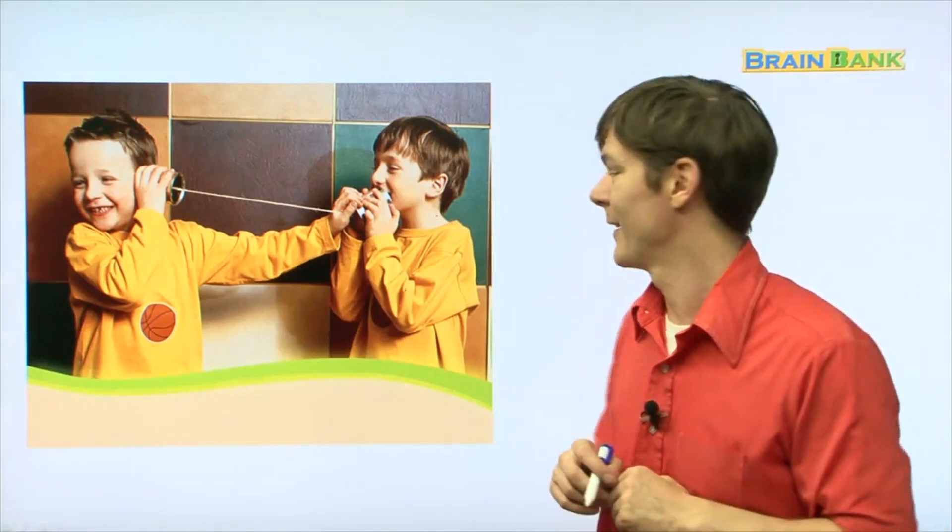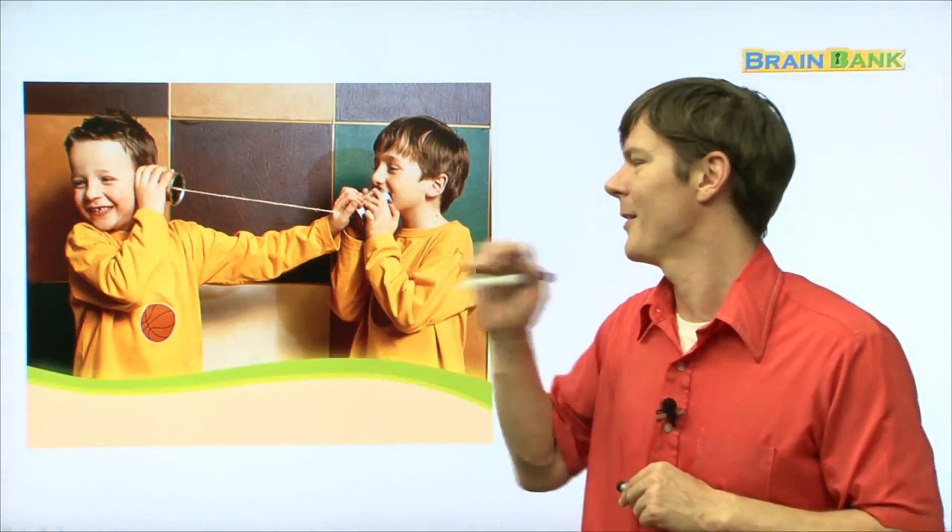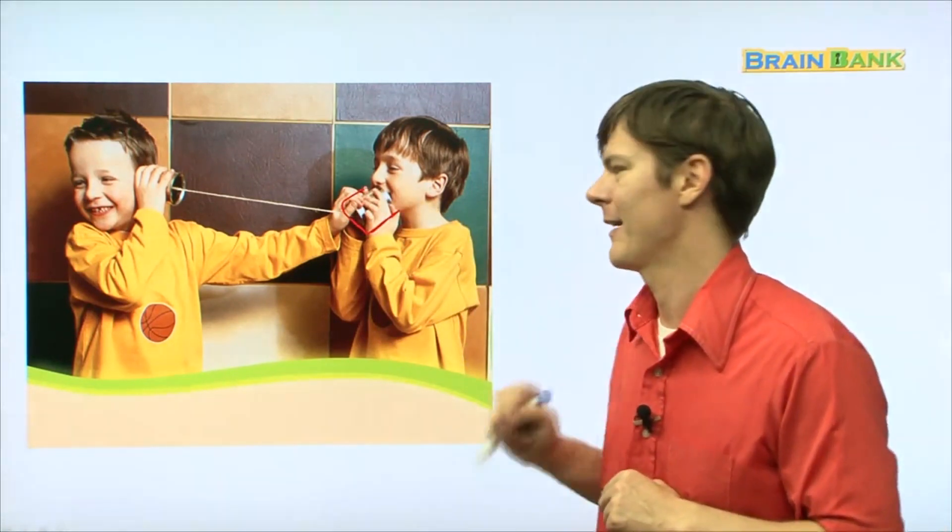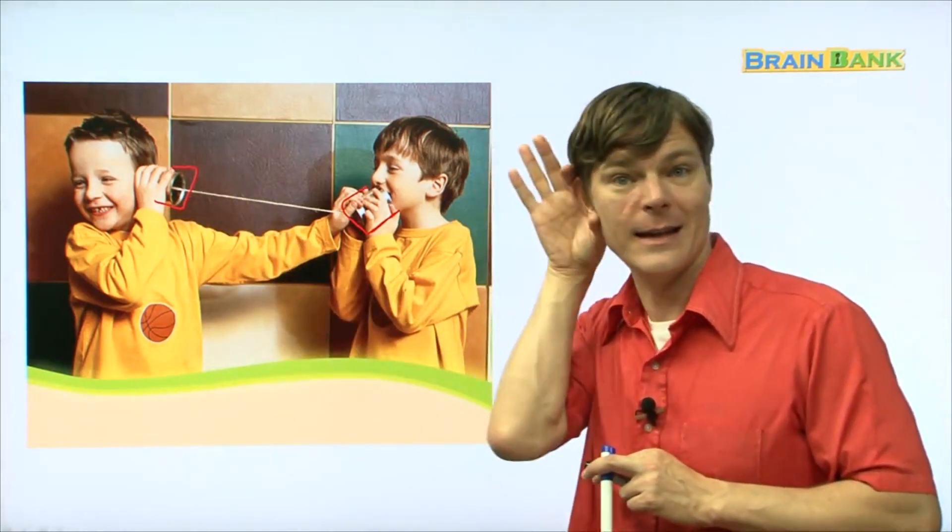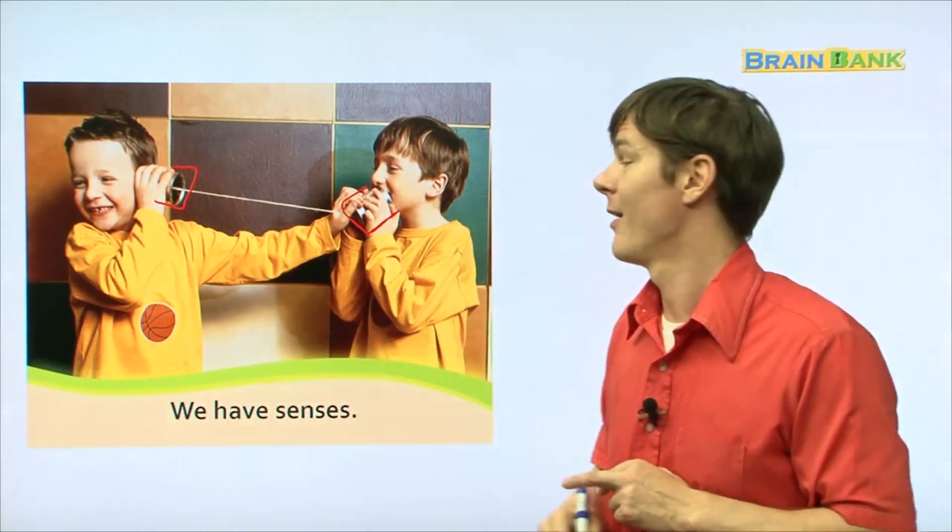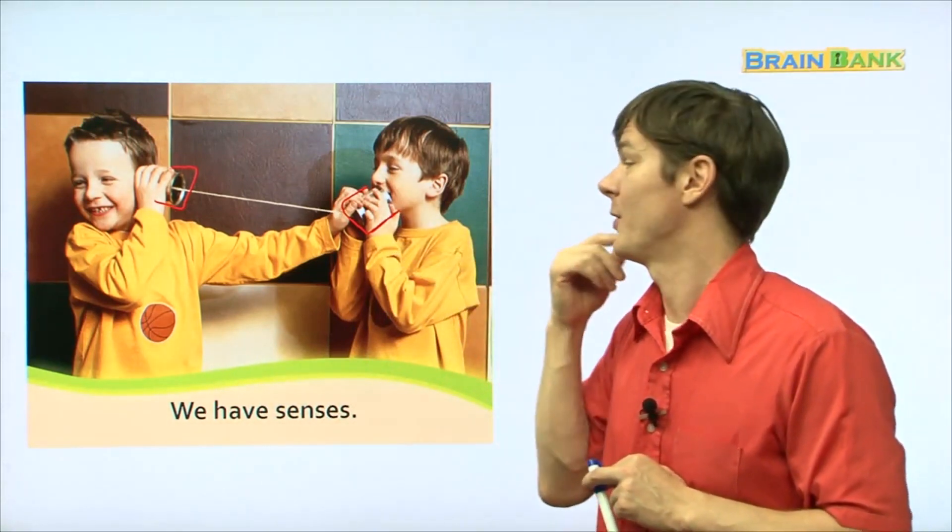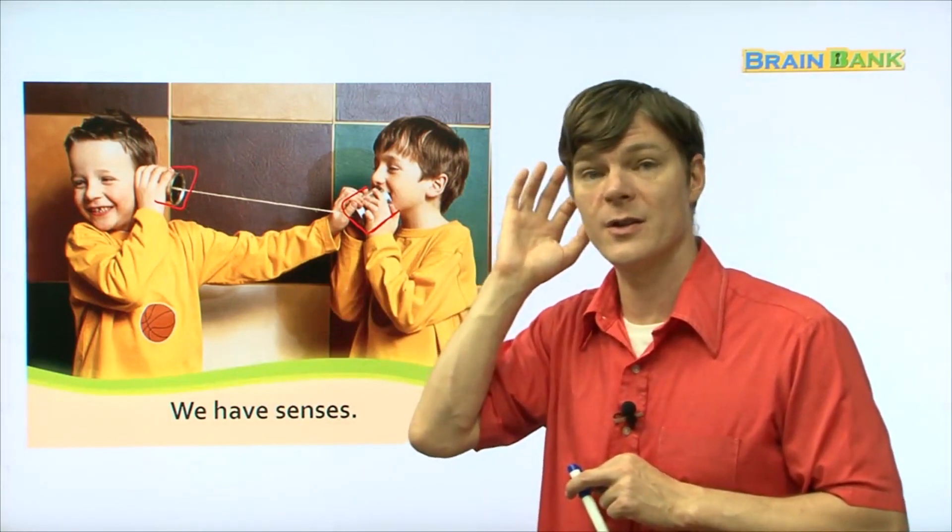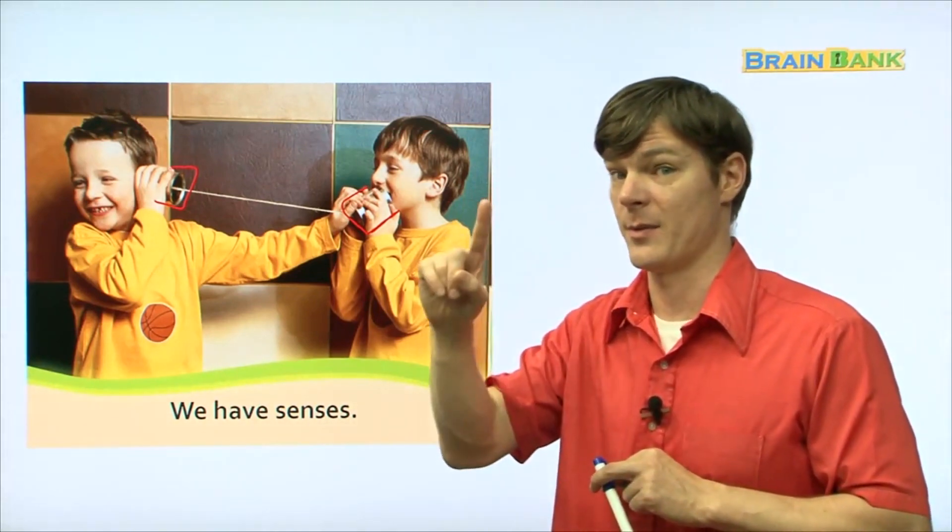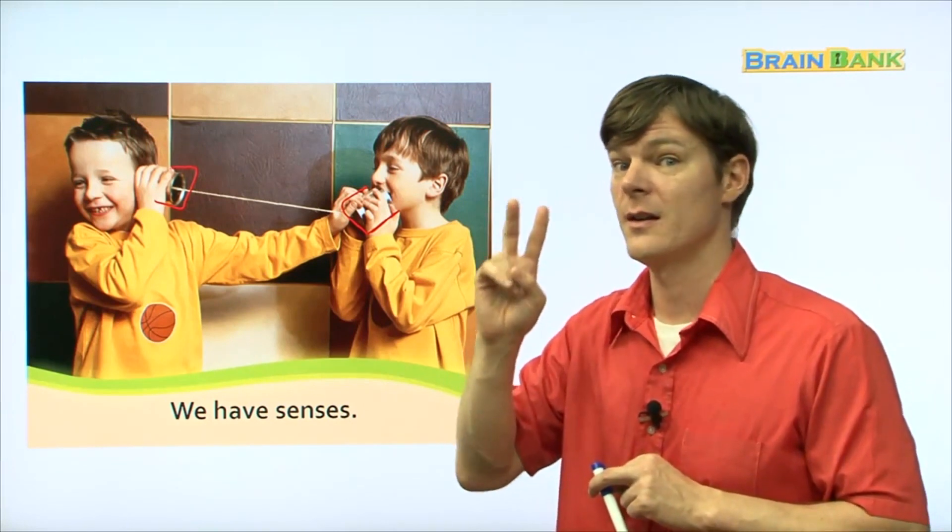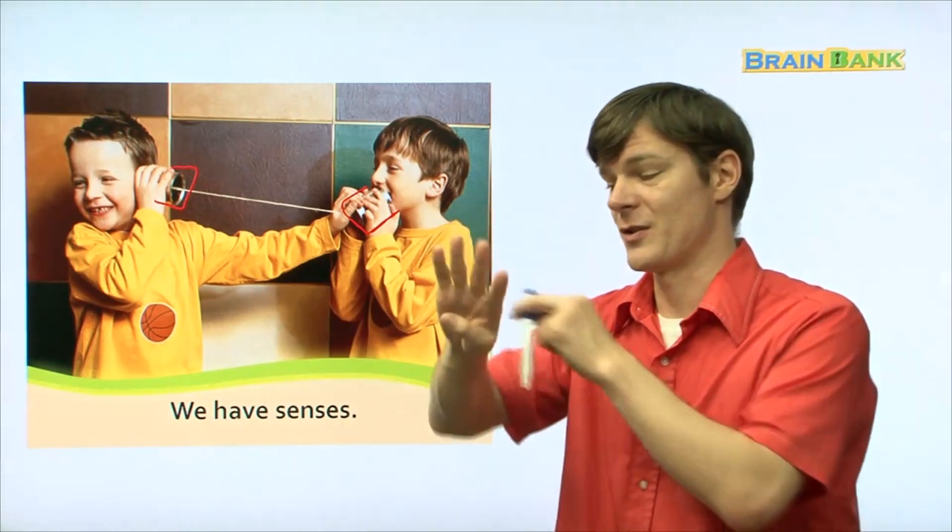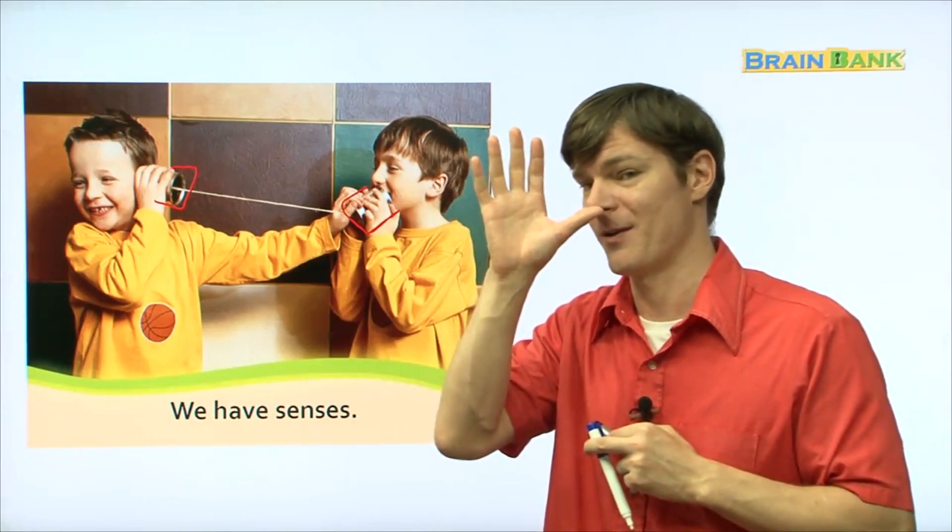Now, let's look at these two. These two boys are playing around with a can on a string. This one, what do you think he's doing? He's talking. And this boy, what do you think he's doing? He's listening. He's listening. We have senses. We have five senses. This one is using his mouth to speak. And this one is using his ears to hear. We have five senses. We have five senses. Do you know what they are? They're the sense of sight, to be able to see. The sense of hearing, to be able to hear. The sense of taste, to be able to taste something when you eat it. And the sense of smell. And the sense of smell, which is your nose, which is your nose.